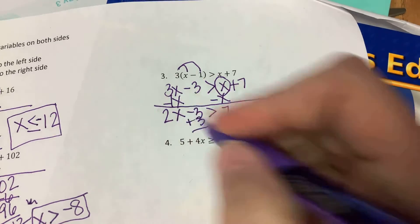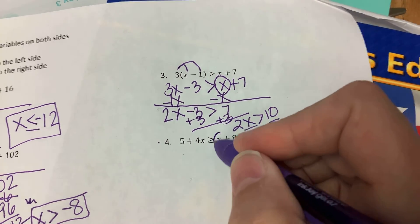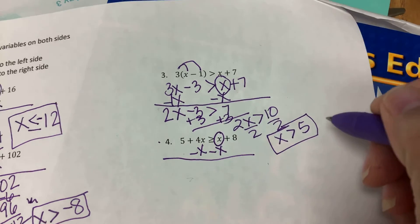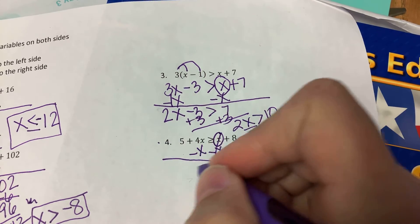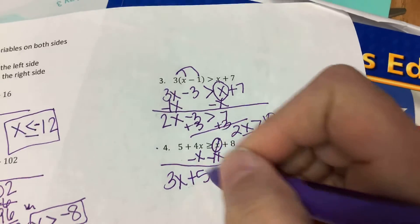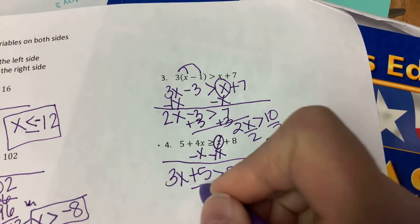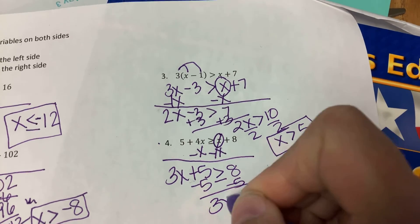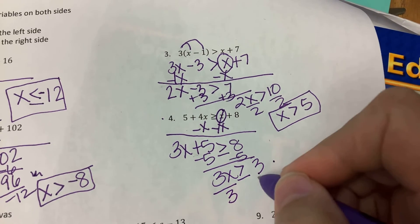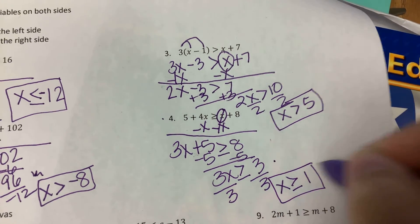Number 4: 5 plus 4x is greater than or equal to x plus 8. The x that's on the right, we're going to move it over by subtracting. 4x minus x is 3x, and we bring the plus 5 along — so 3x plus 5 is greater than or equal to 8. Subtract 5 from both sides, then divide by 3. Does the inequality sign flip when I divide by 3? No, because I didn't divide by a negative. So x is greater than or equal to 1.